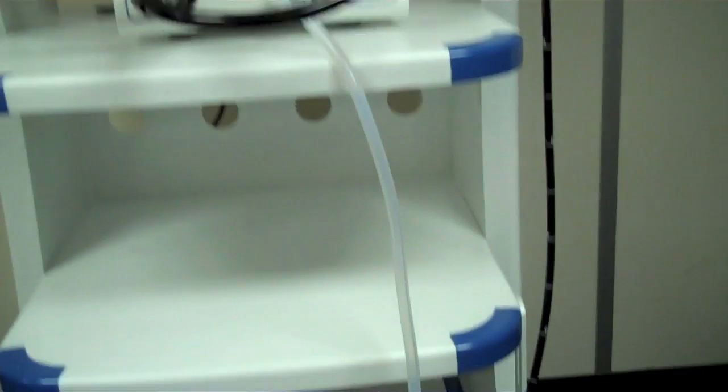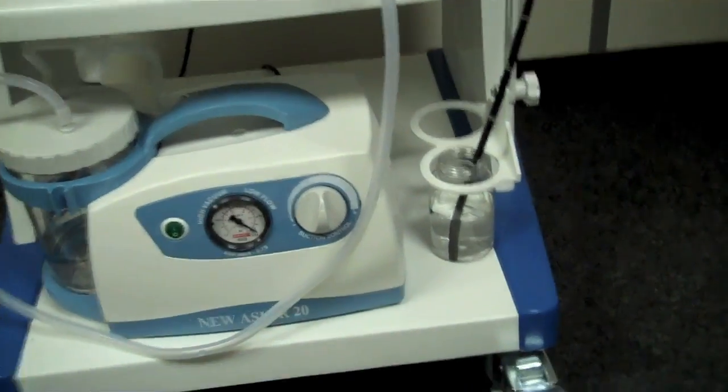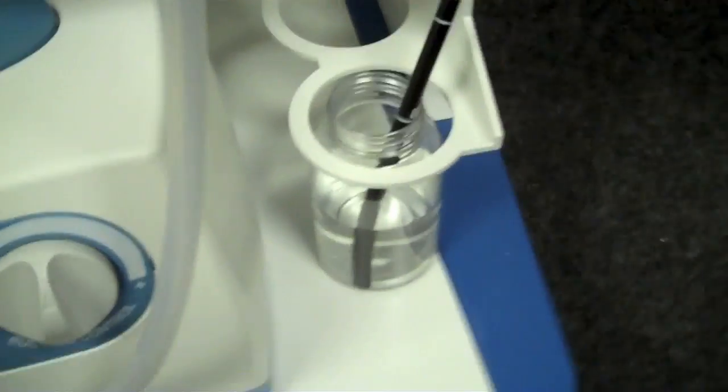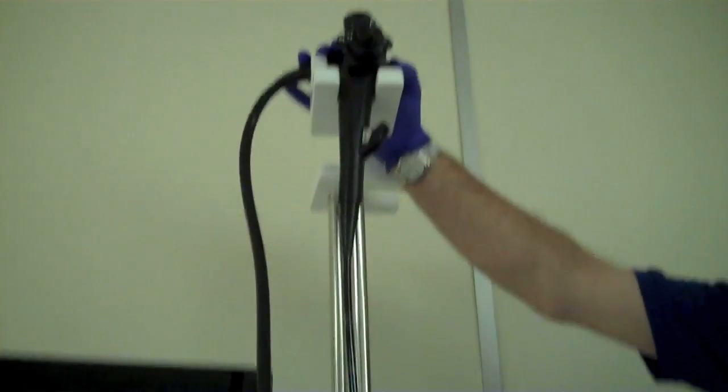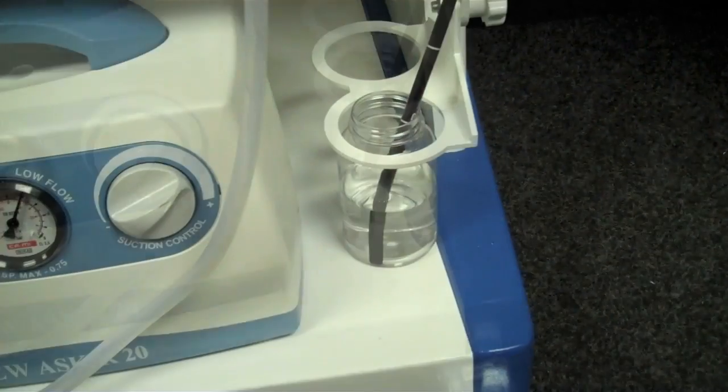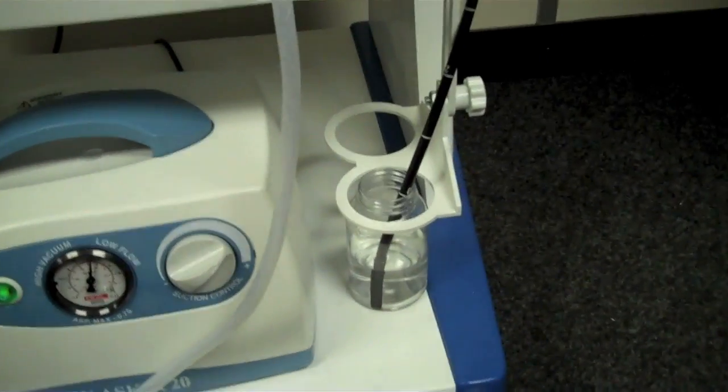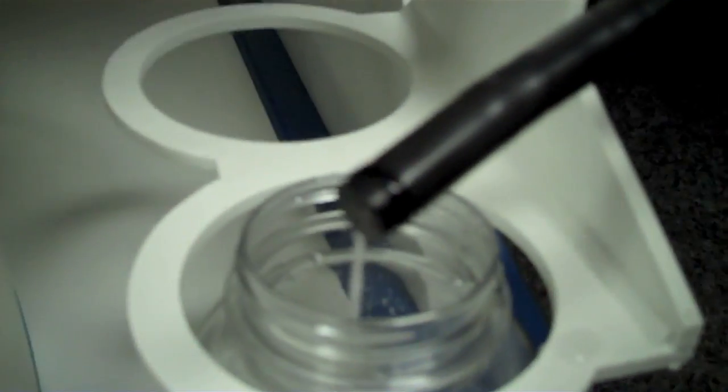Once the endoscope has been used, put it back on the cart like this and put some clean water solution in this tube. We're just going to suck this through. Now we'll just suck through a quantity of water to help clean the working channel. Now just aspirate a bit of liquid through the air water channel.